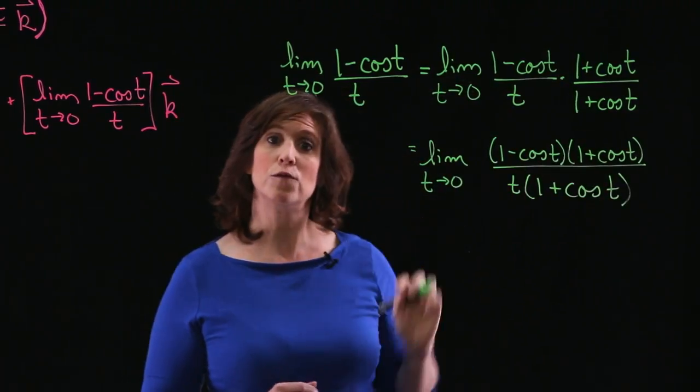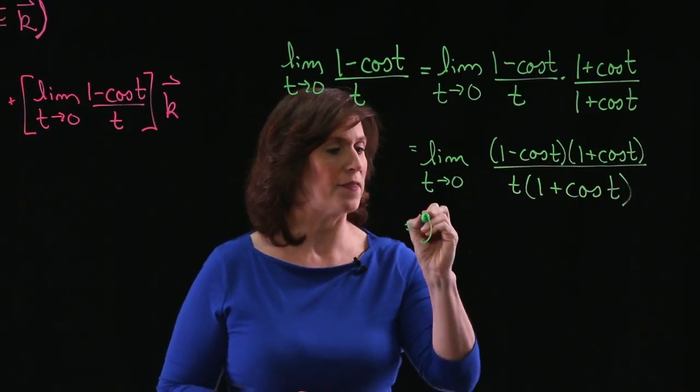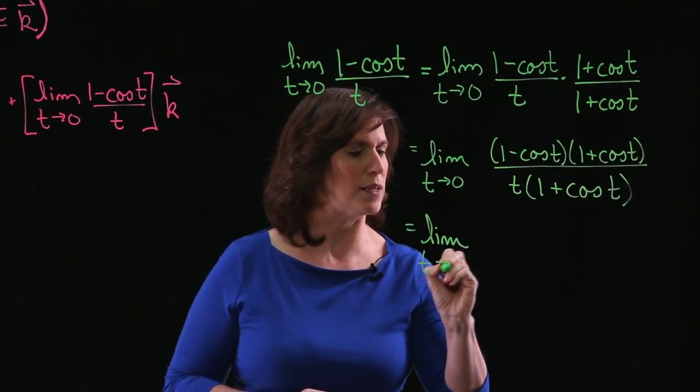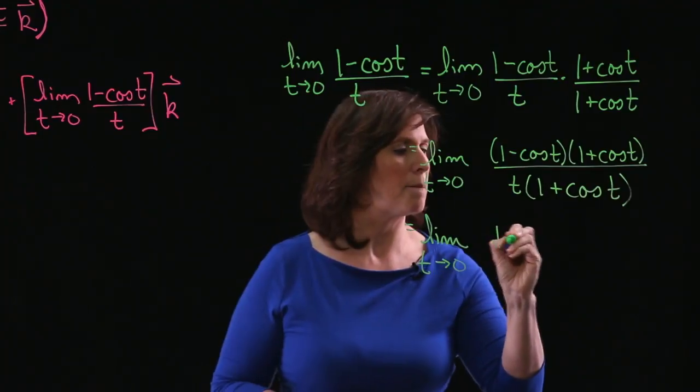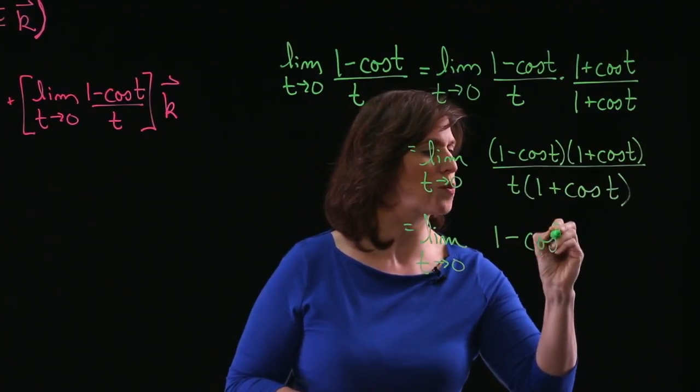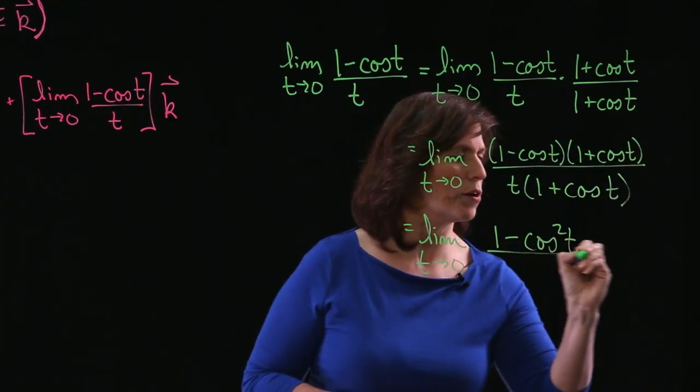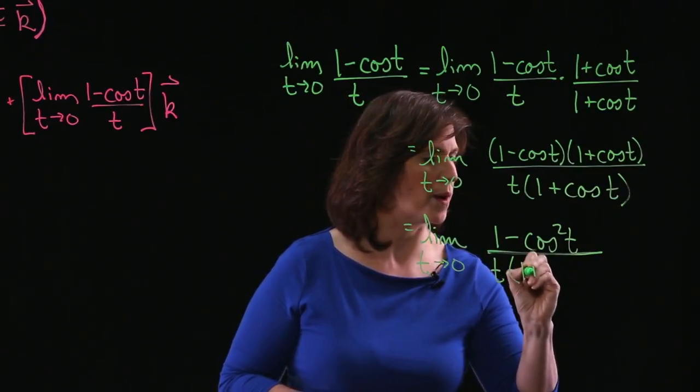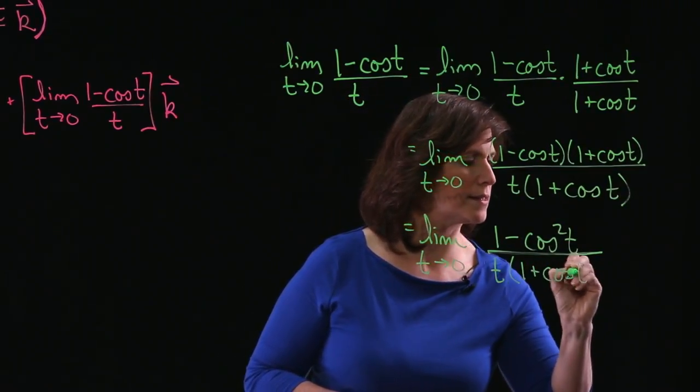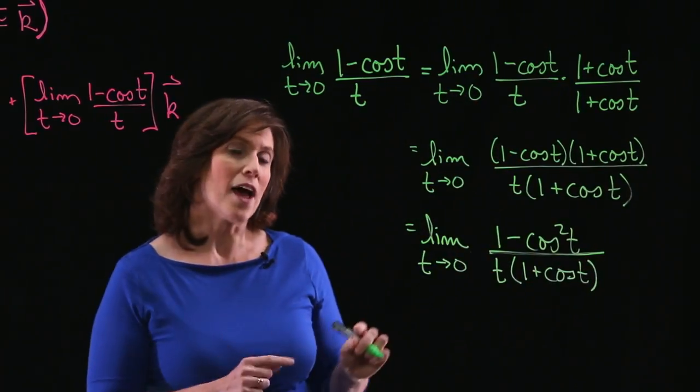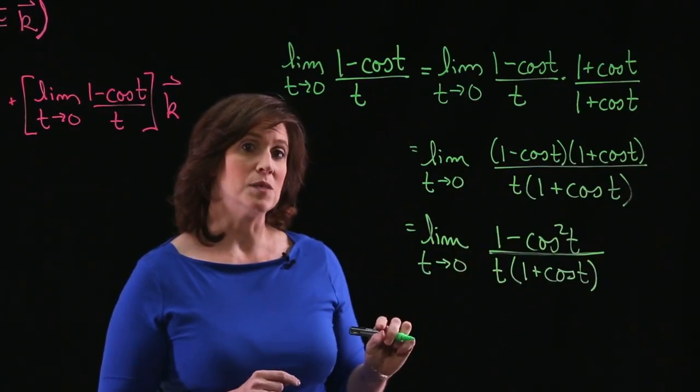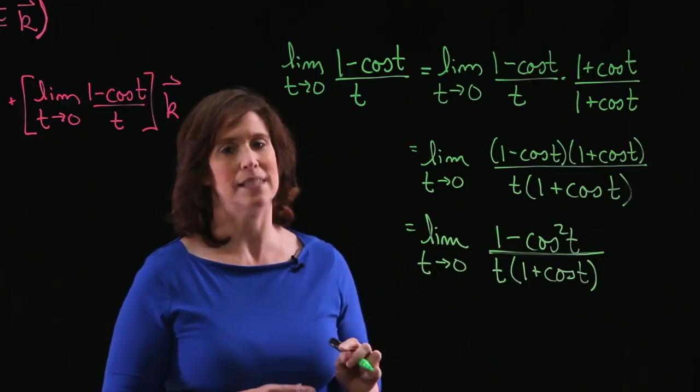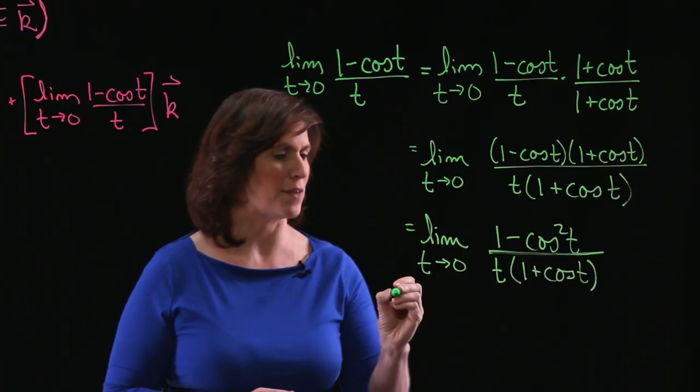Now I'm going to go ahead and use FOIL in the numerator. And I've got the limit as t approaches 0 of 1 minus cosine squared t all over t times the quantity 1 plus cosine t. Now if you want to try to do a direct substitution at this point, you can. But you're still going to get 0 over 0. So I'm not ready to do that yet.